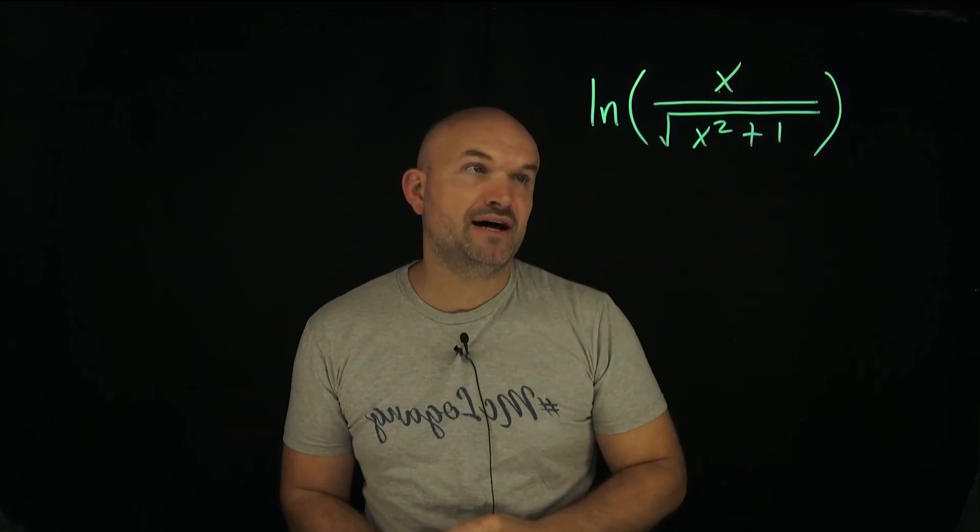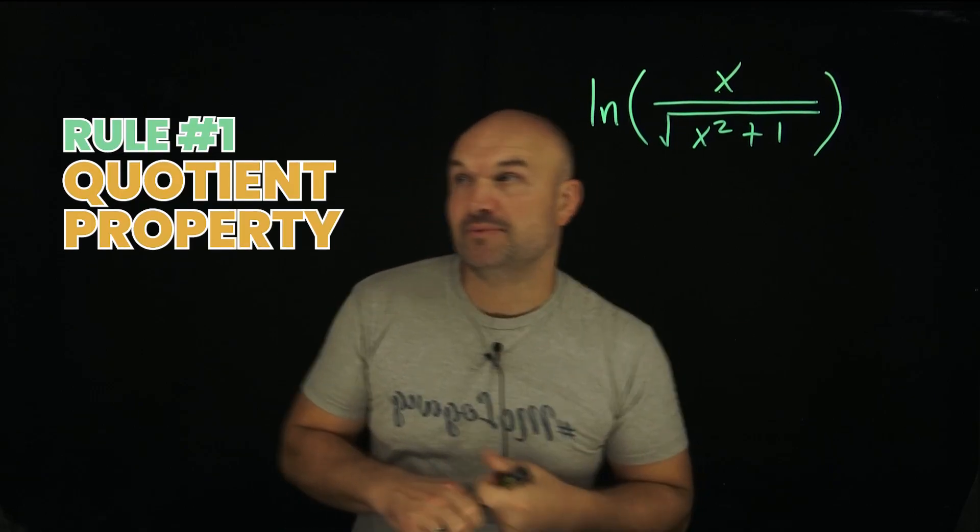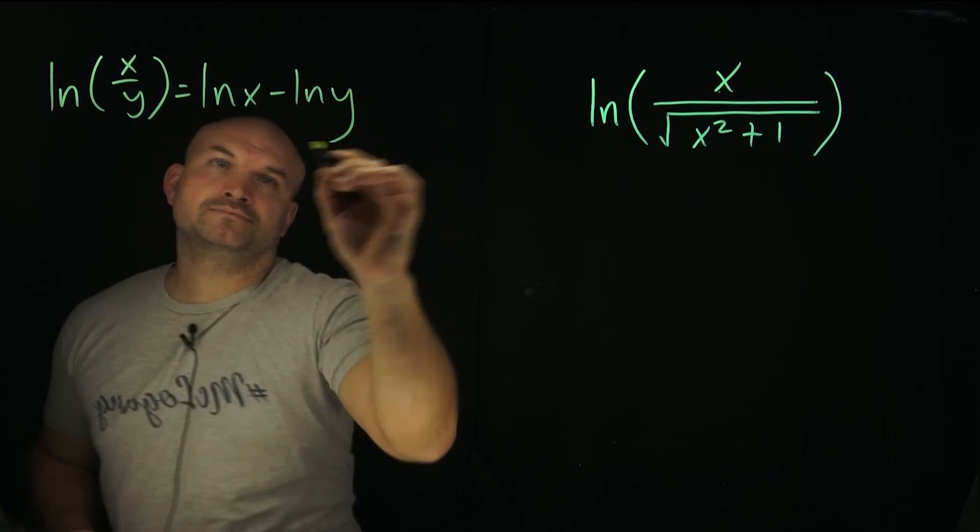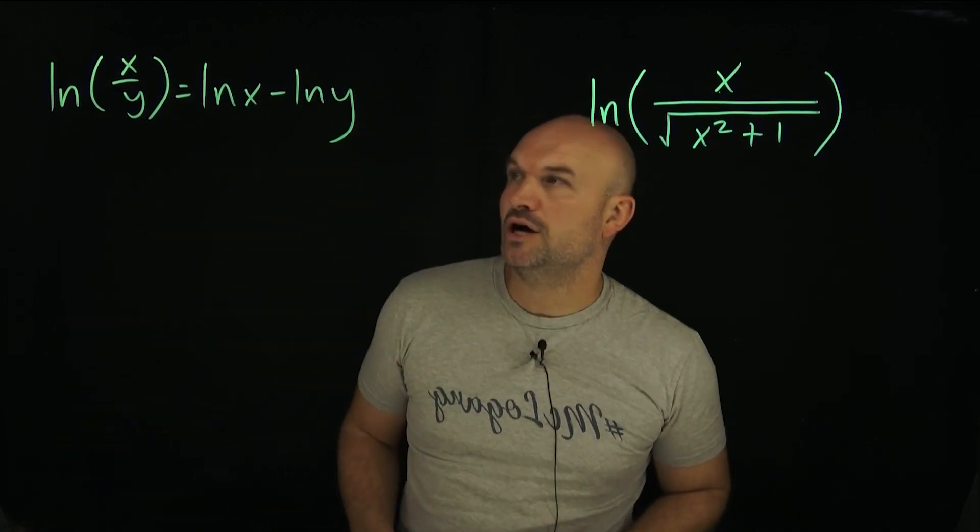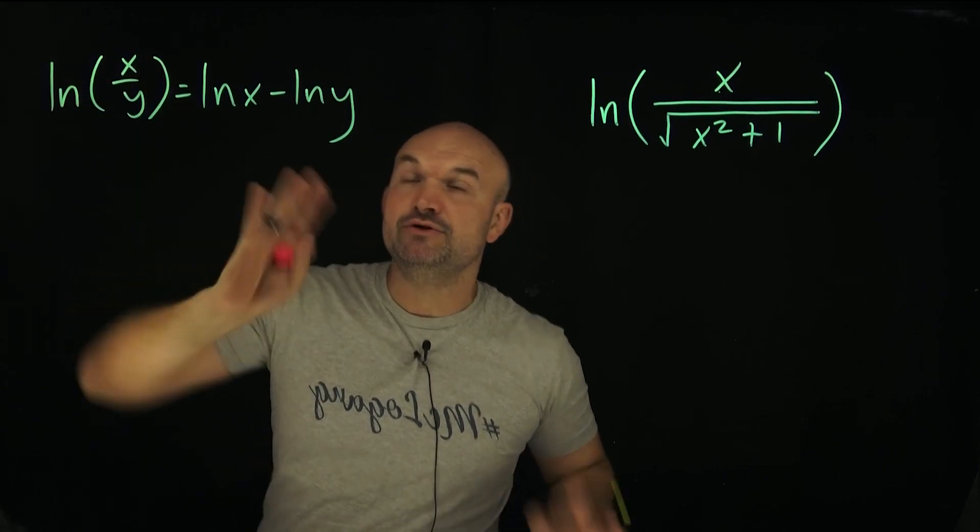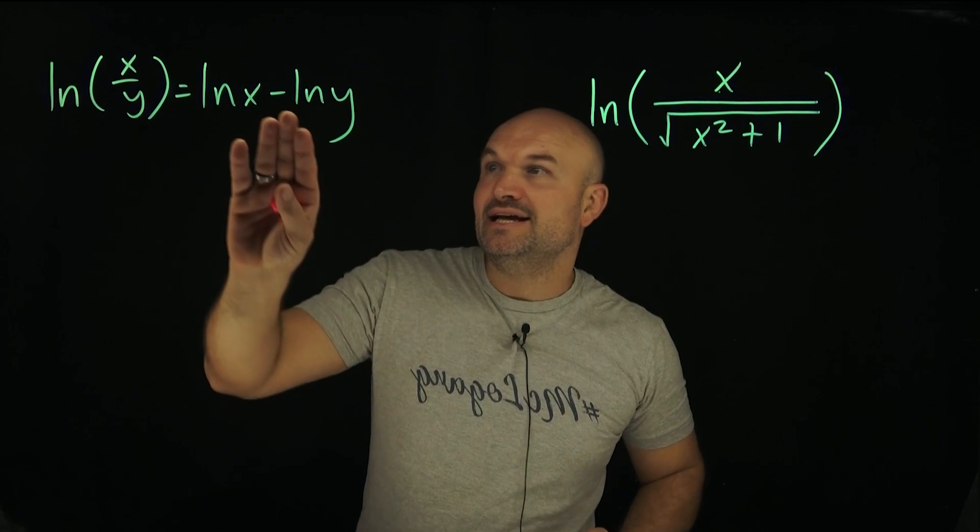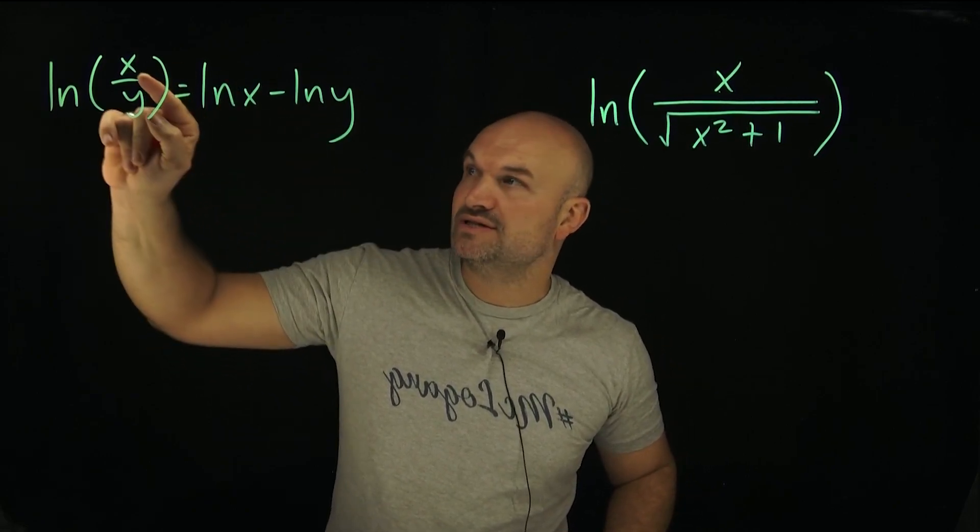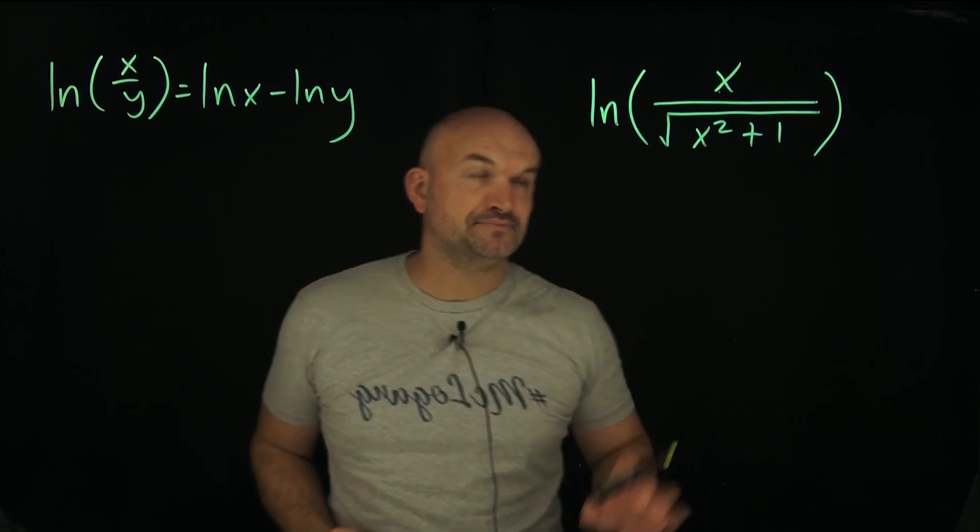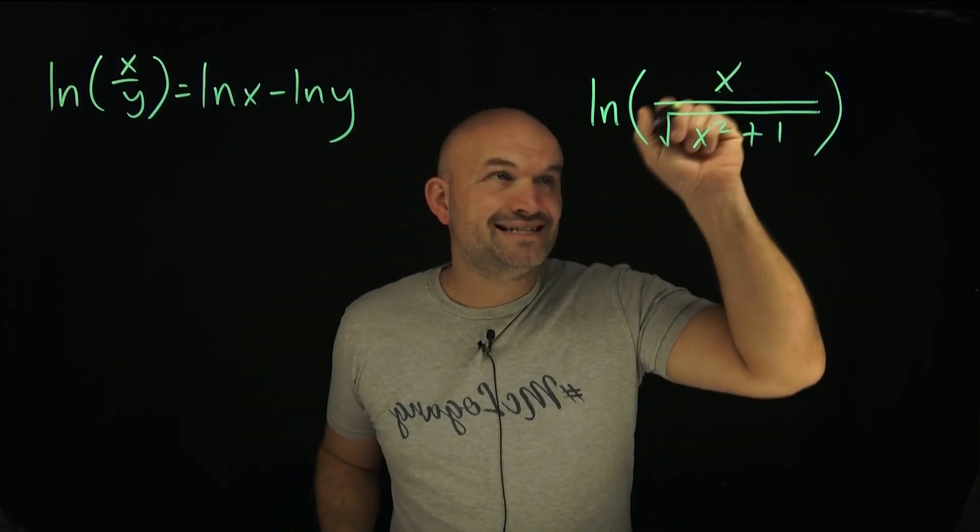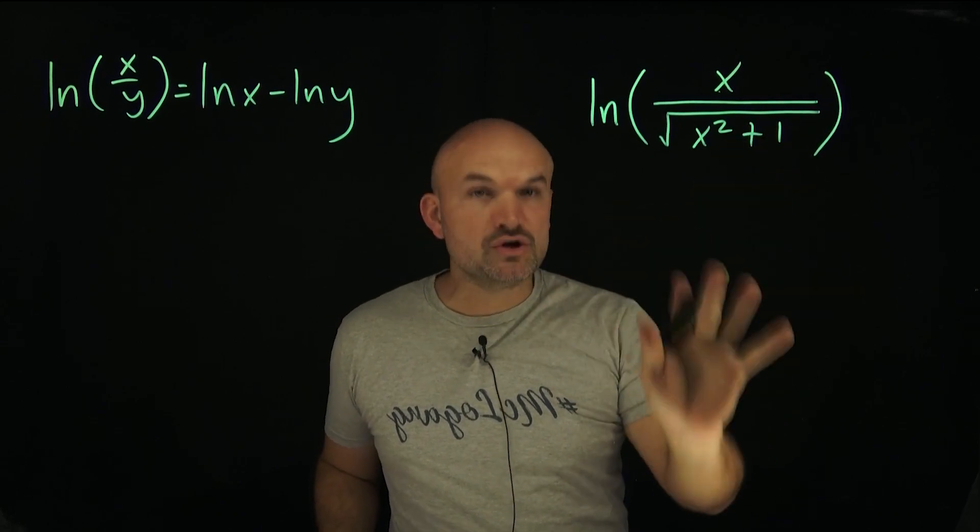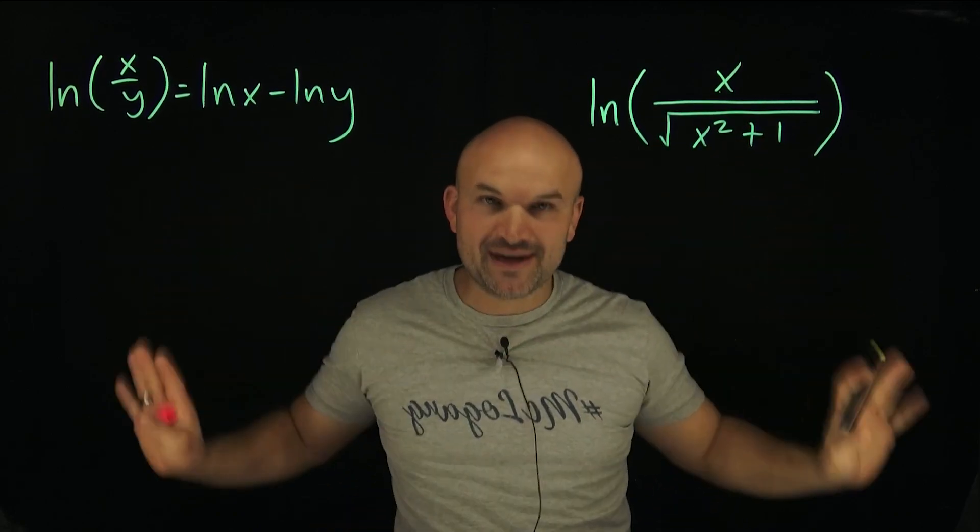Now, the first rule we're going to follow here is the quotient property. Basically what the quotient property for a logarithm says is, if you have a logarithm of a quotient, then you can expand that out into the difference of the two logarithms, where it's the logarithm of the numerator minus the logarithm of the denominator. What I see here is exactly that—I have a quotient here. So I'm going to apply the quotient property first to get rid of the fraction.